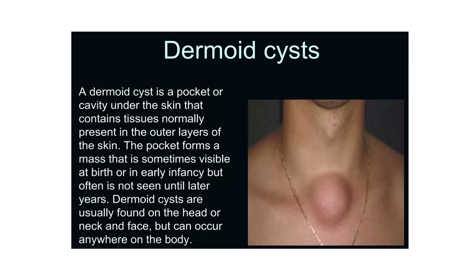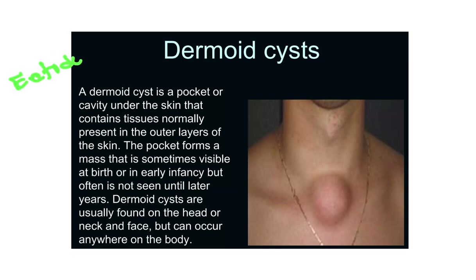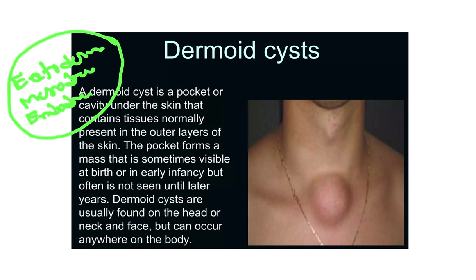The dermoid cyst contains all three germ layer contents — that means content derived from the ectoderm, mesoderm, and endoderm. Because it contains derivatives of all three embryonic germ layers, skin may be present, nail may be present, hair may be present, and other connective tissue may also be present in this dermoid cyst.